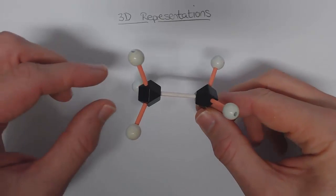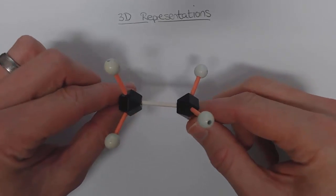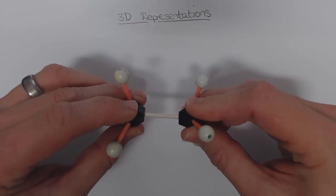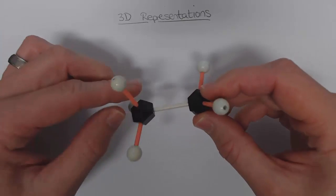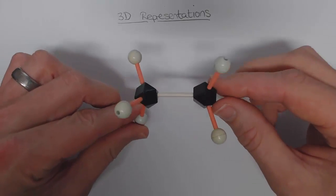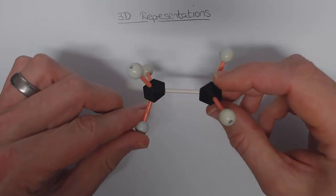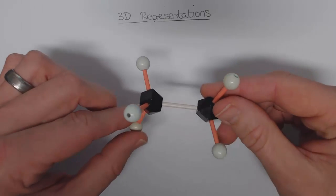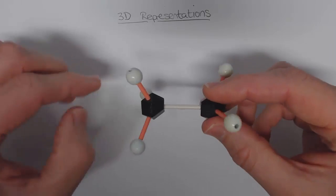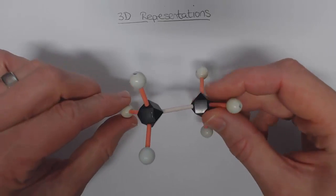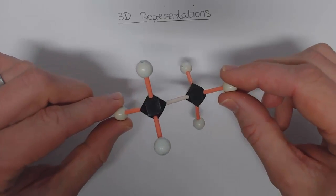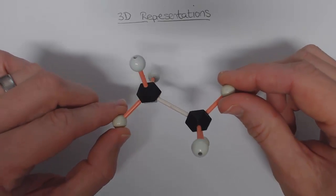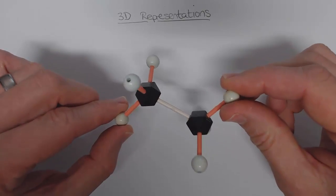I've got a very simple molecule here of ethane. It's not a terribly exciting molecule, but even just in its simplicity with two carbon atoms, there's a three-dimensional shape to this molecule which we need to be able to appreciate.